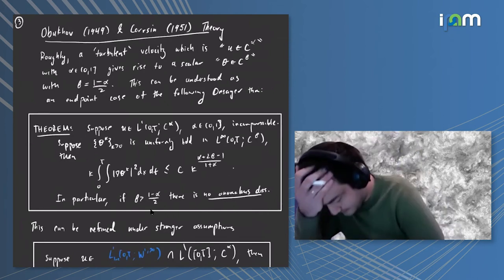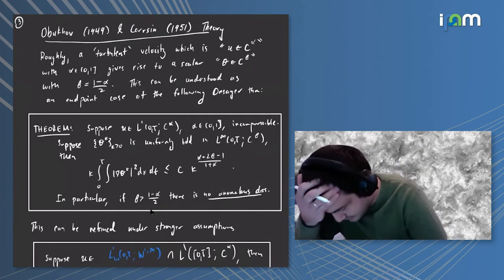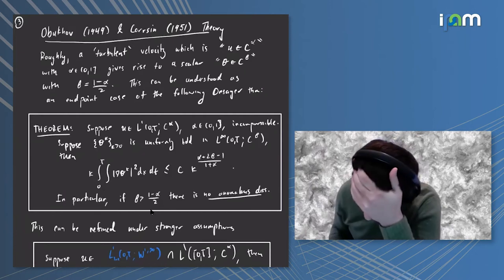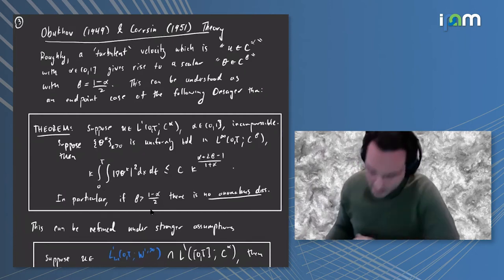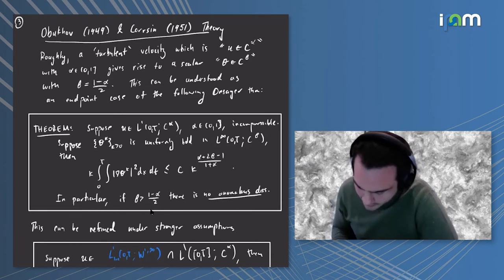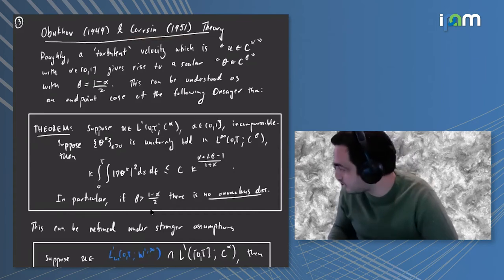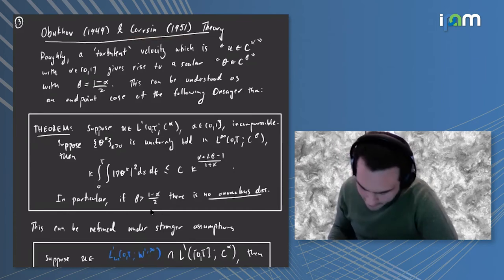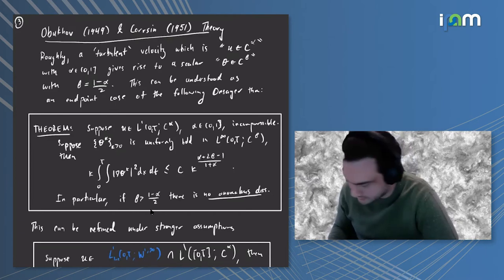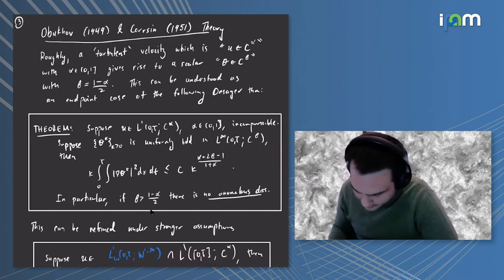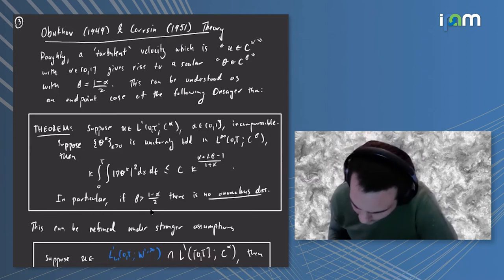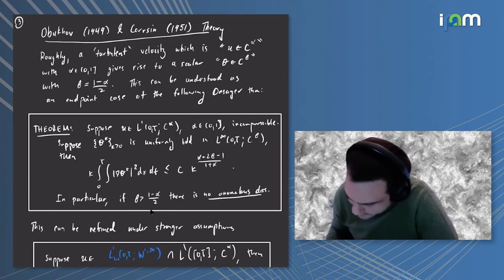The fact that those two phenomena are so similar means there are also very similar theoretical underpinnings. There was work of Obukhov in 1949 and Corrsin in 1951 which paralleled the work of Kolmogorov and Onsager. I'll paraphrase what the content of their theory is.